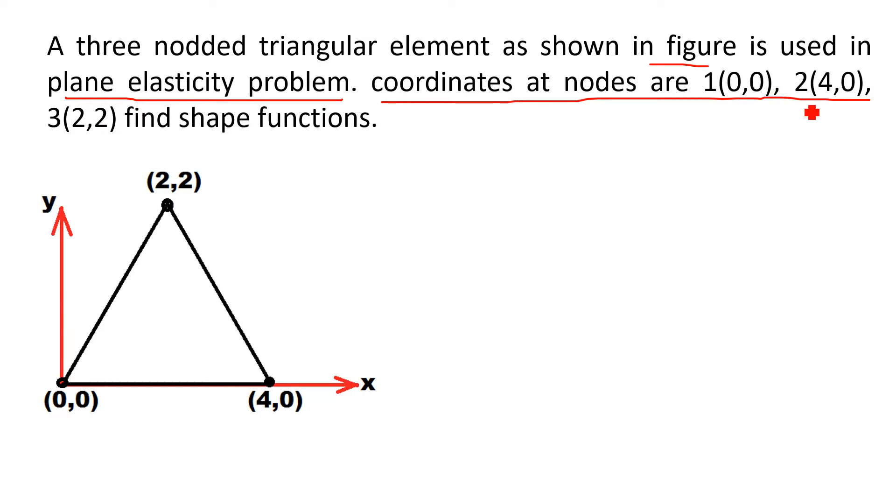Coordinates of all three nodes are node number 1: (0,0), node number 2: (4,0), and node number 3: (2,2). The question is to find shape functions of these three-noded triangular element.